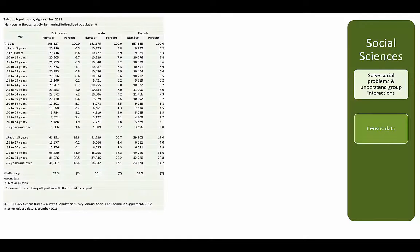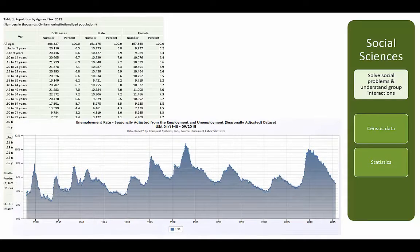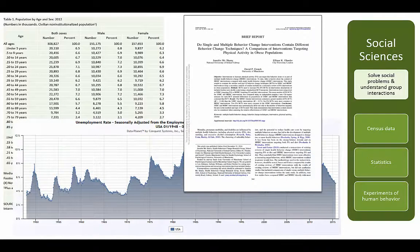Primary sources might include data that has been gathered to analyze the relationships between people, events, and their environment. Examples of these kinds of sources include census data, statistics, and experiments of human behavior.